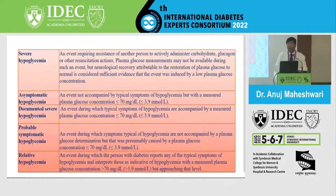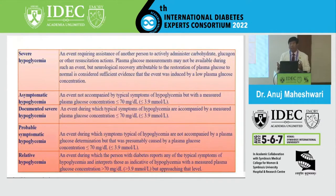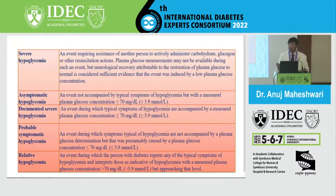When a patient comes in having fainted, and glucose is given intravenously or glucagon subcutaneously and the patient becomes alert again, in such situations nobody usually remembers to measure the blood glucose level with a glucometer. As a result, we don't get any documentation of these kinds of events.